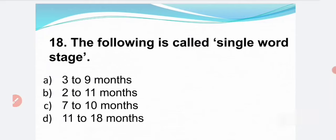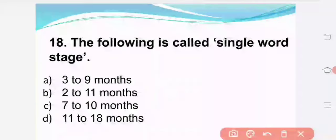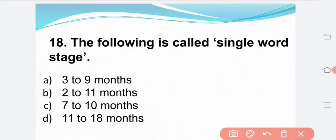The following is called the single word stage: Option A — 3 to 9 months. Option B — 2 to 11 months. Option C — 7 to 10 months. Option D — 11 to 18 months. The correct answer is Option D: 11 to 18 months.